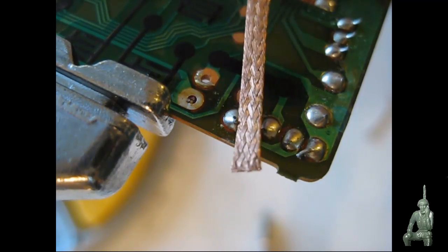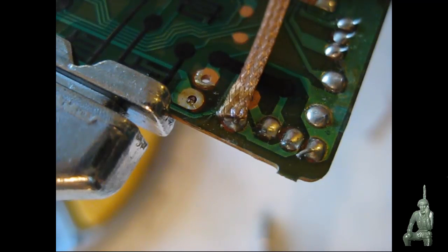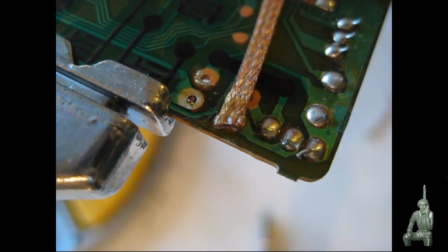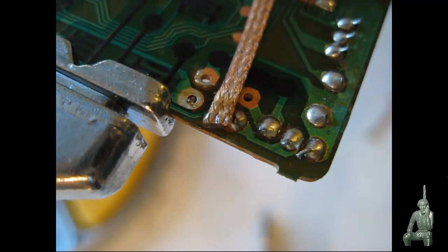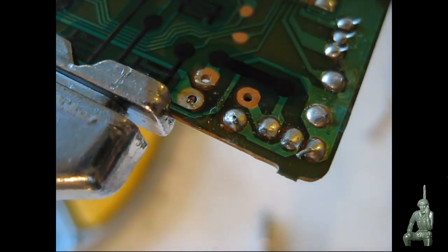This is braided copper. What I'm going to do is dip it in flux. I'm doing that off camera because I have it set in macro mode. I'm going to put that on this joint here and then apply heat. What will happen is the wick will heat up and it will draw the solder off the circuit board into this copper wick.